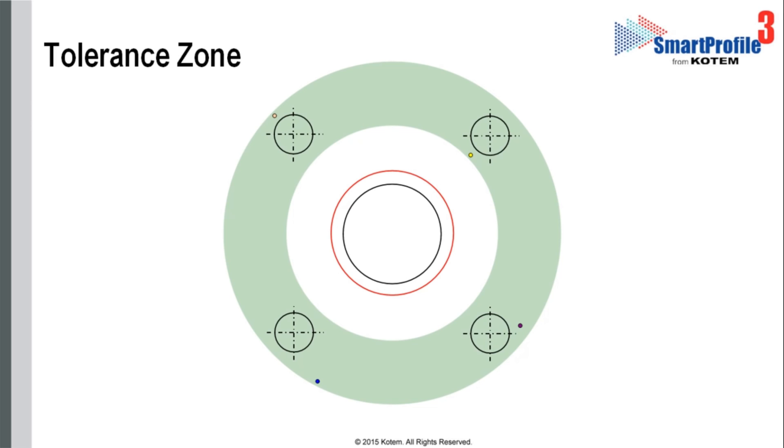When the datum feature simulator touches datum feature B, we can see the closest and the farthest away the gauge can get from the part. This determines the boundaries of the tolerance zones.